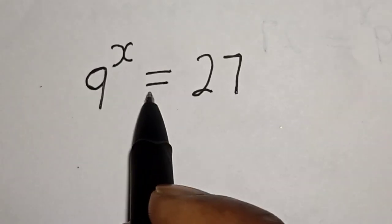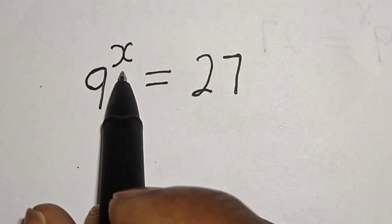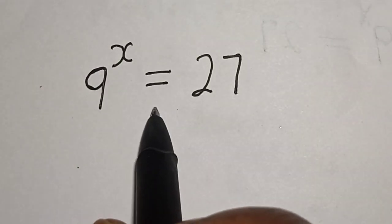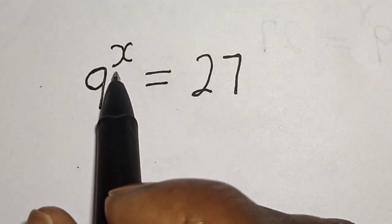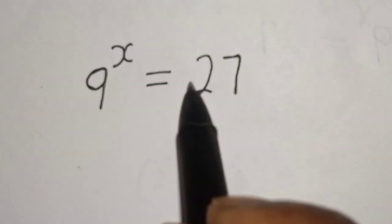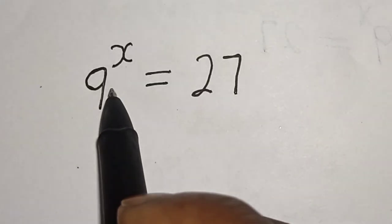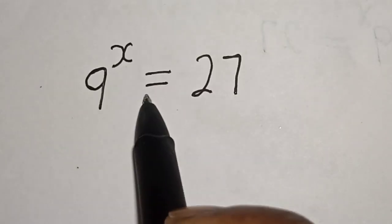9 raised to the power s is equal to 27. What is the value of s? Hi everyone, welcome to my class. In this class we want to find the value of s from this equation: 9 raised to power s is equal to 27.